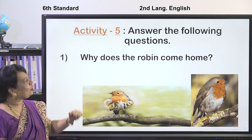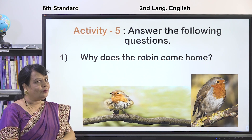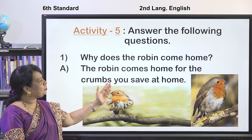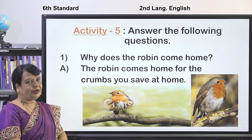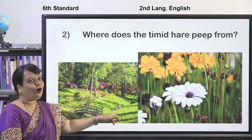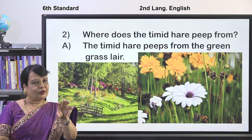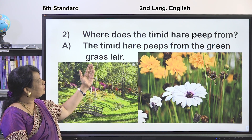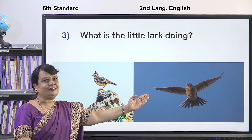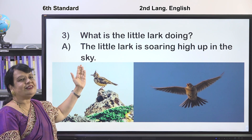Activity 5: Answer the following questions. Why does the robin come home? The robin comes home for the crumbs you save at home. Where does the timid hare peep from? The timid hare peeps from the green grass lair. What is the little lark doing? The little lark is soaring high up in the sky.